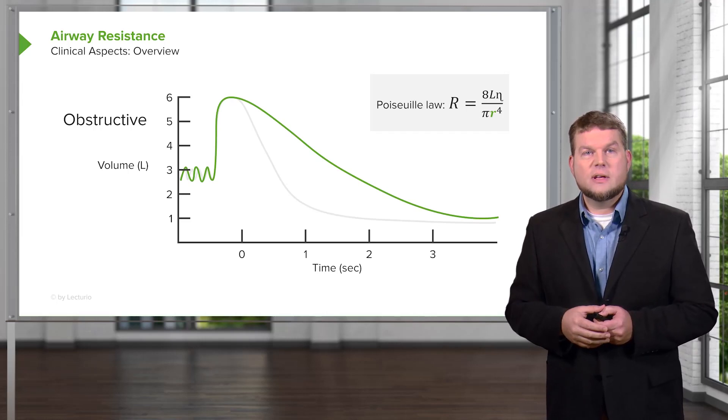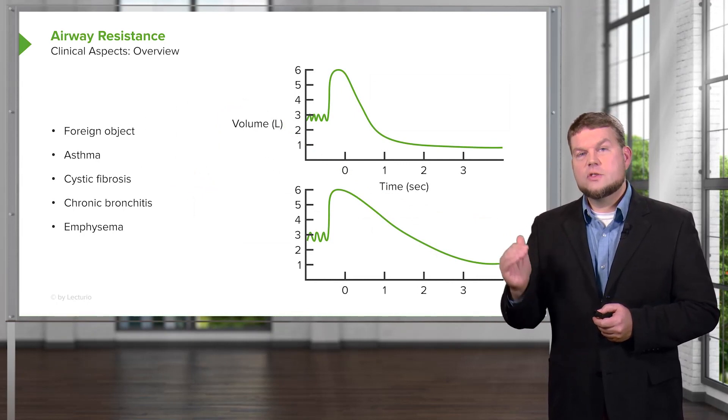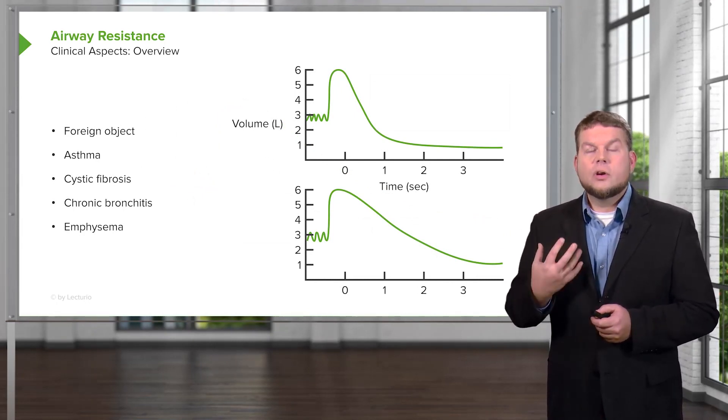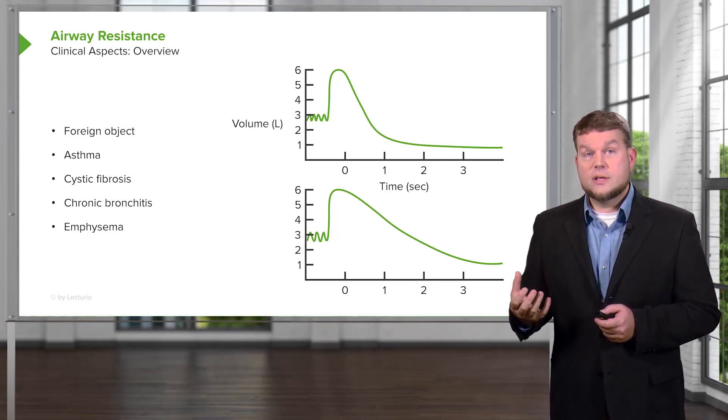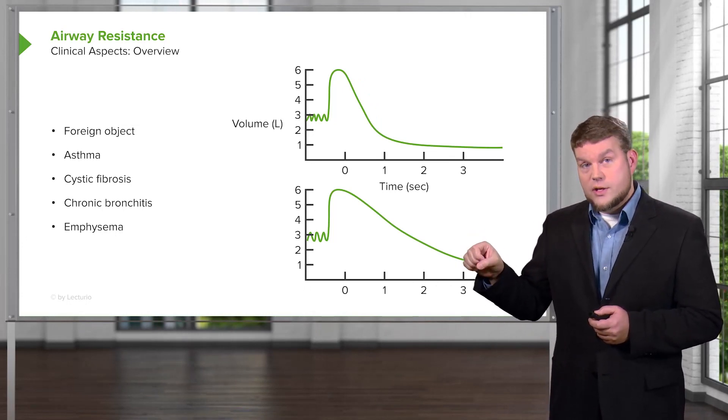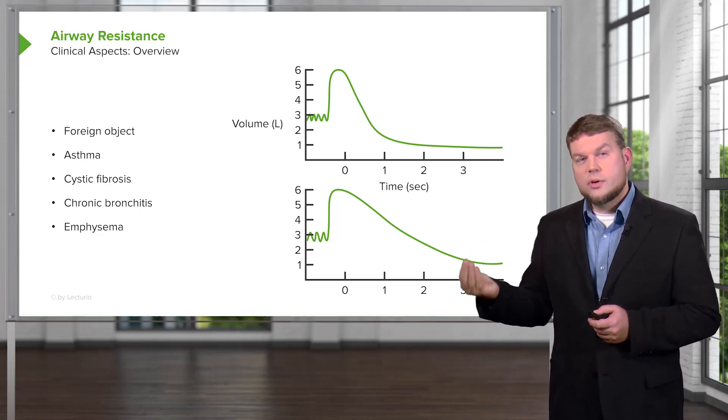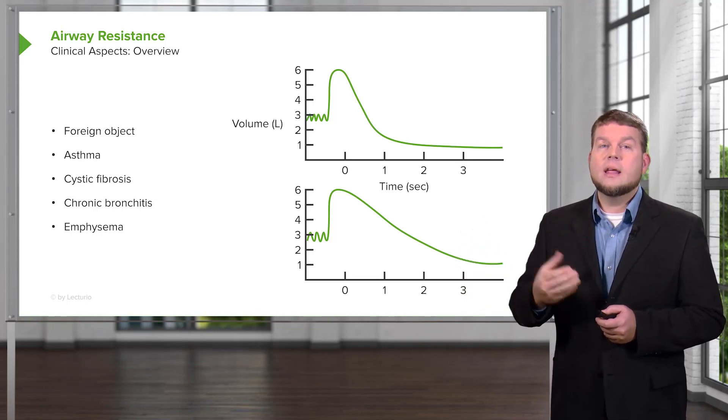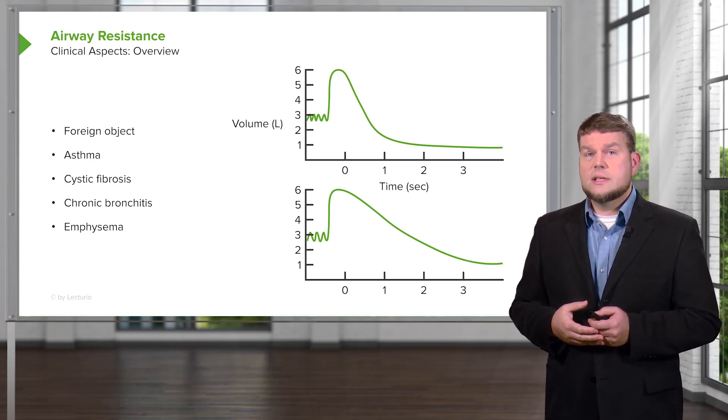Let me give you some clinical examples. An example of this particular response is let's say you have a foreign object trapped in your airway. Asthma is a great example of an increase in resistance because what happens there is there's a bronchial constriction. In cystic fibrosis, there's increased mucus production and therefore the airway is a lower diameter or lesser diameter. Chronic bronchitis and emphysema, you also can get increases in resistance.